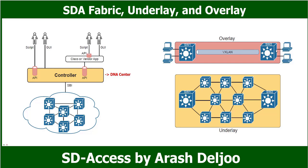A packet enters on the left side of the physical network and eventually exits the campus out to switch 2 on the far right. This underlay network looks like a more traditional network drawing with several devices and links. The overlay drawing shows only two switches called fabric edge nodes — one on each side — because they are at the edge of the SDA fabric, with a VXLAN tunnel connecting the two. Together, underlay and overlay create the SDA fabric.